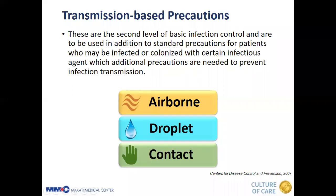Our next topic is transmission-based precautions. These are the second level of basic infection control. These are to be used in addition to standard precautions for patients who may be infected or colonized with certain infectious agents, for which additional precautions are needed to prevent infection transmission. We have airborne, droplet, and contact precautions.